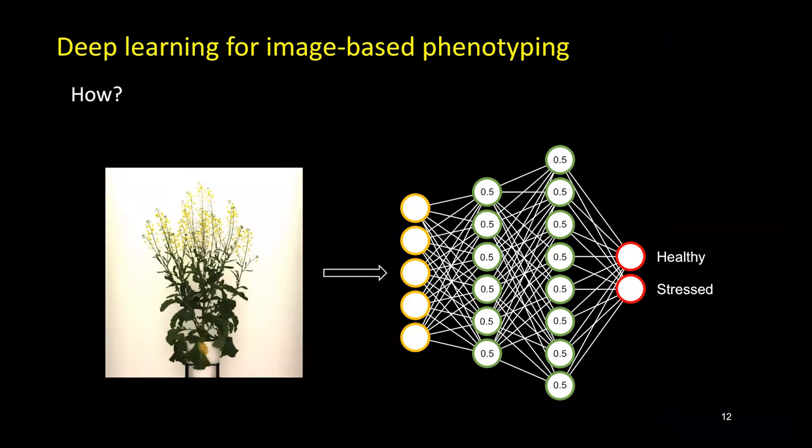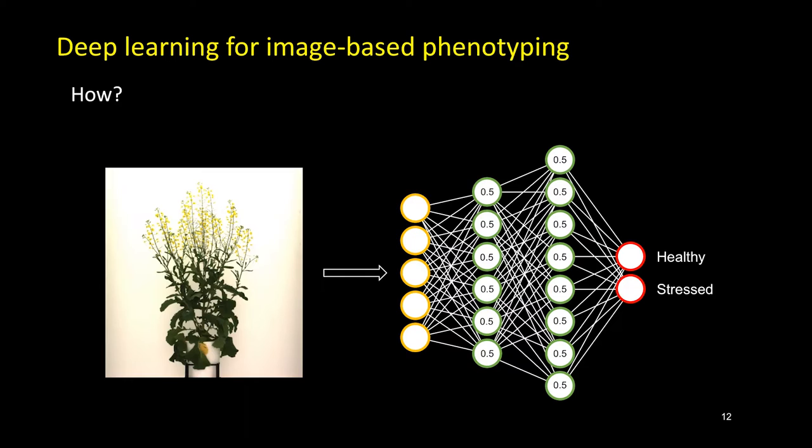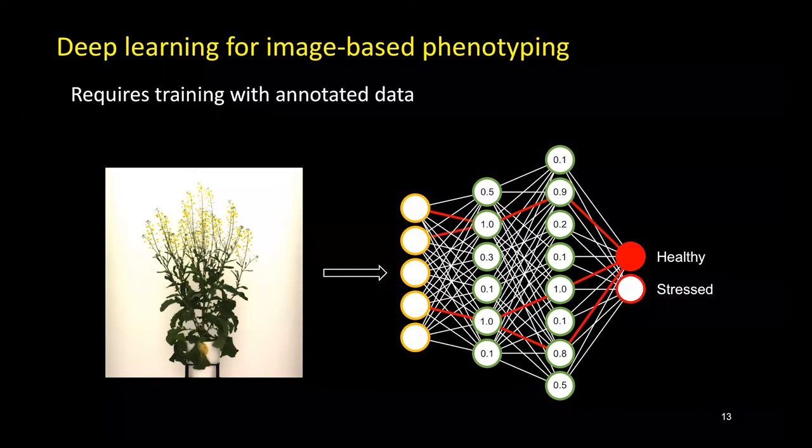In this example, a neural network breaks down an input image into nodes and assesses what is in the image. Here the task is to classify if the plant is healthy or stressed. Initially, the weights are arbitrary, but after feeding in images with the known answer, the weights are adjusted so that the network returns with high propensity the known answer. As an example, I've set the weights in the hidden middle layer of nodes to show how the network might arrive at an answer.